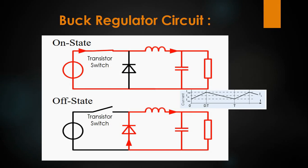This is the circuit diagram of a buck regulator. As you can see, it mainly has an inductor, a transistor switch, and a diode. Consider the switch to be closed at first — the current will flow through the inductor and the load, following the path as shown in red in the first diagram. As the inductor has a tendency to resist a change in current, it will cause a generation of an opposing voltage. This will decrease the net voltage across the load. During this time, the inductor stores the energy in the form of a magnetic field. The diode is reverse biased in this state.